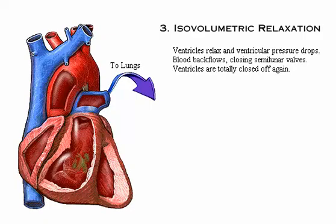In the third phase of the cardiac cycle, isovolumetric relaxation, the ventricles relax and ventricular pressure drops. Blood in the aorta and pulmonary trunk backflows toward the heart, closing the semilunar valves. The ventricles are totally closed off again in this isovolumetric relaxation phase.